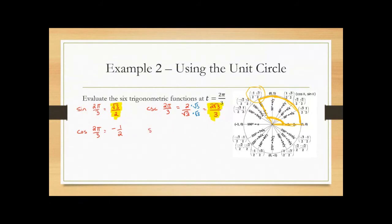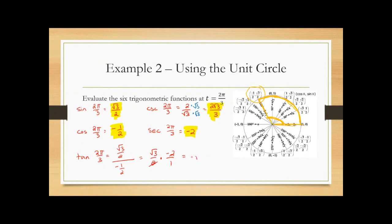Next is cosine of 2π/3, which is the X value of the ordered pair, so that's -1/2. The secant would be -2/1, so that's just -2. That one's nice and easy. It's when you start doing those square roots from the Pythagorean theorem that things get nasty. Tangent is sine over cosine, so that's (√3/2) divided by (-1/2), which means multiplying by the reciprocal -2/1. The twos cancel and we're left with -√3.